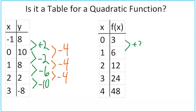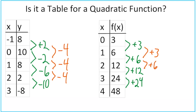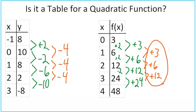On the second table: first differences are +3, +6, +12, +24. When we take the second difference, we get +3, +6, +12 — that is not a constant value, so this is not a quadratic function. You might recognize this is exponential, since each value is being multiplied by 2.